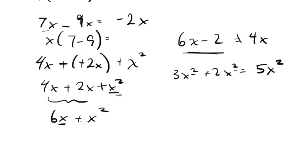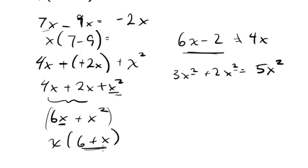Think back to undistributing: with 6x squared plus x, the best we can do is take out one x, leaving us with x times (6 + x) — we can't combine further inside. Similarly, with 6x minus 2, we could factor out a 2, leaving 2(3x minus 1), but there's nothing more to do. We just have to leave it as 6x minus 2, and the earlier expression as 6x plus x squared.